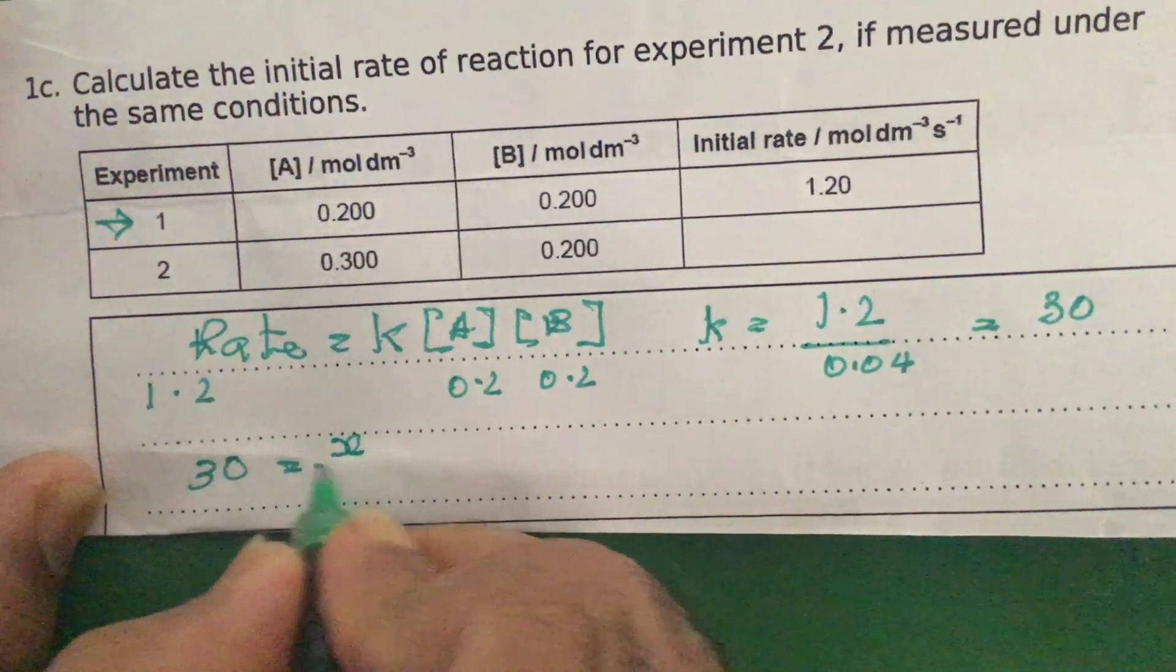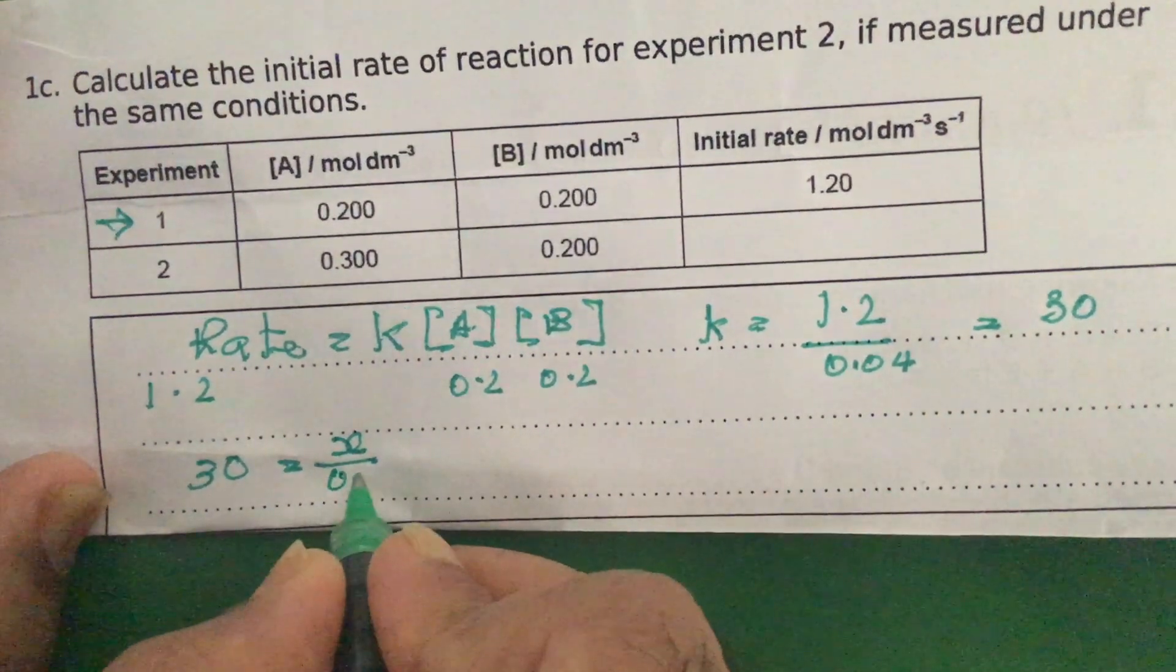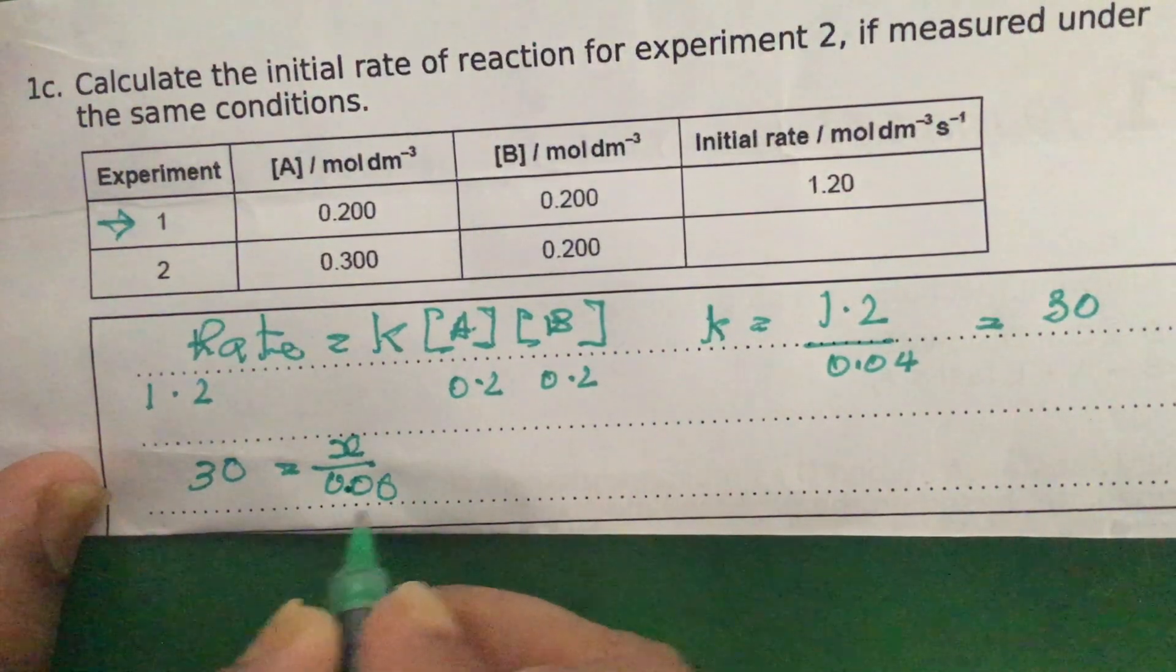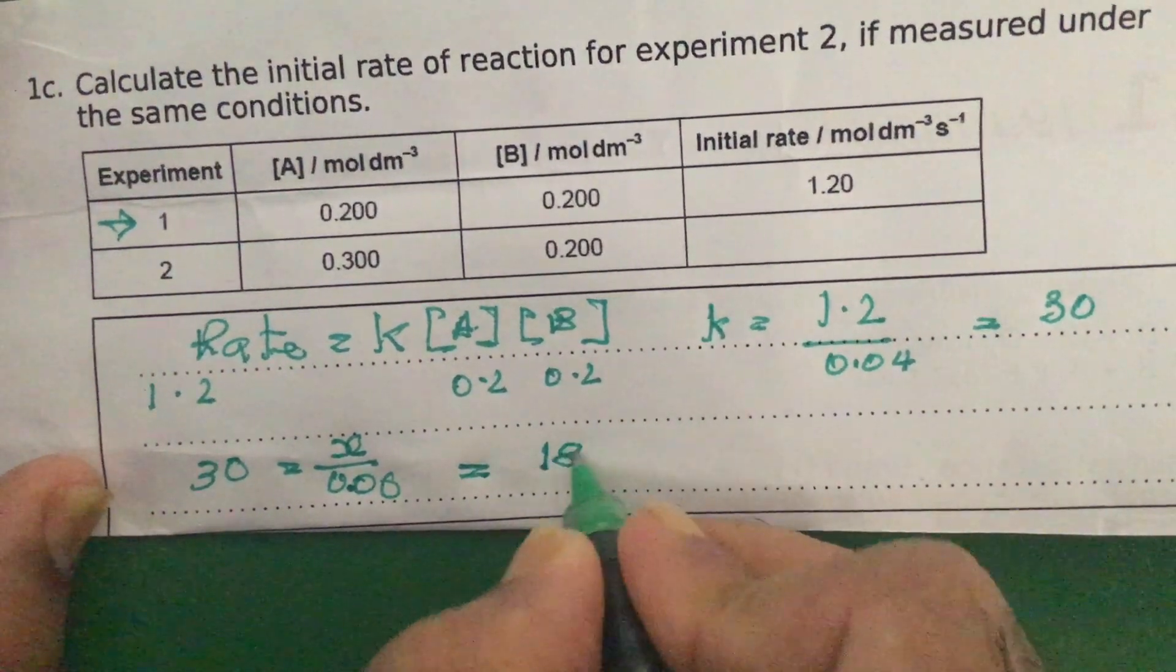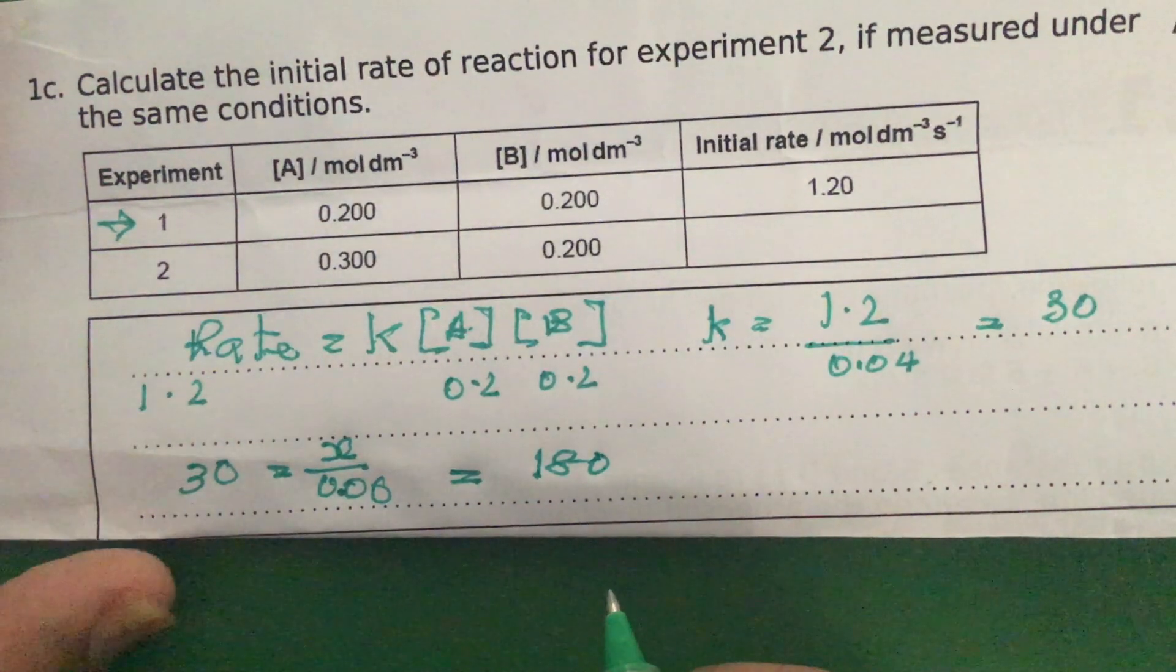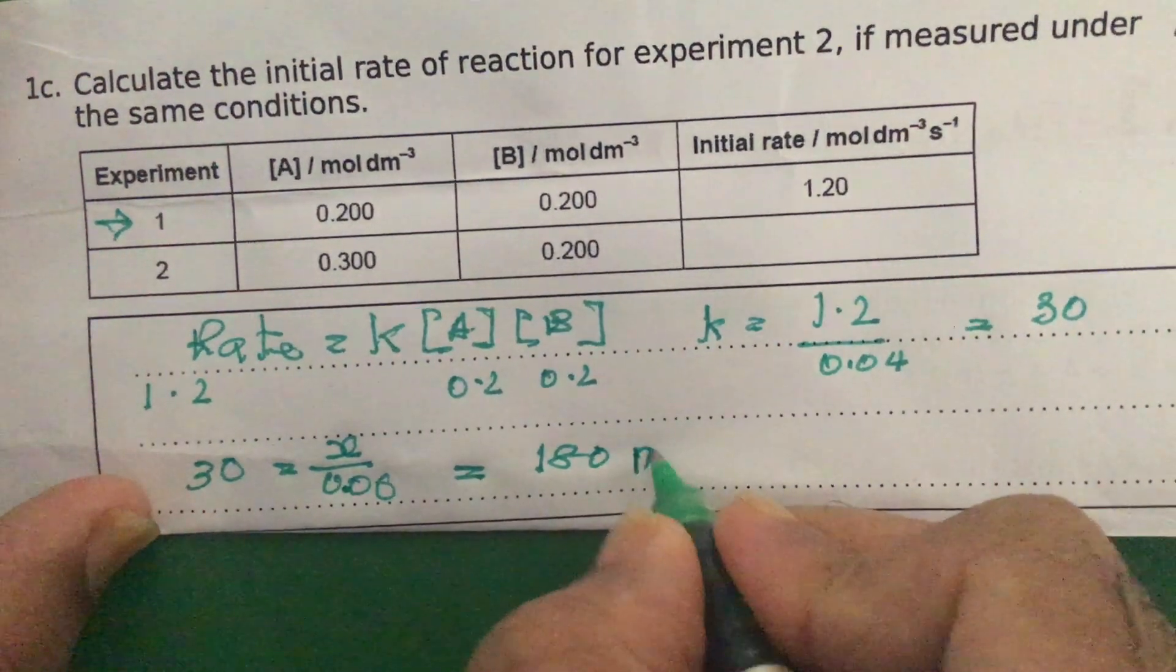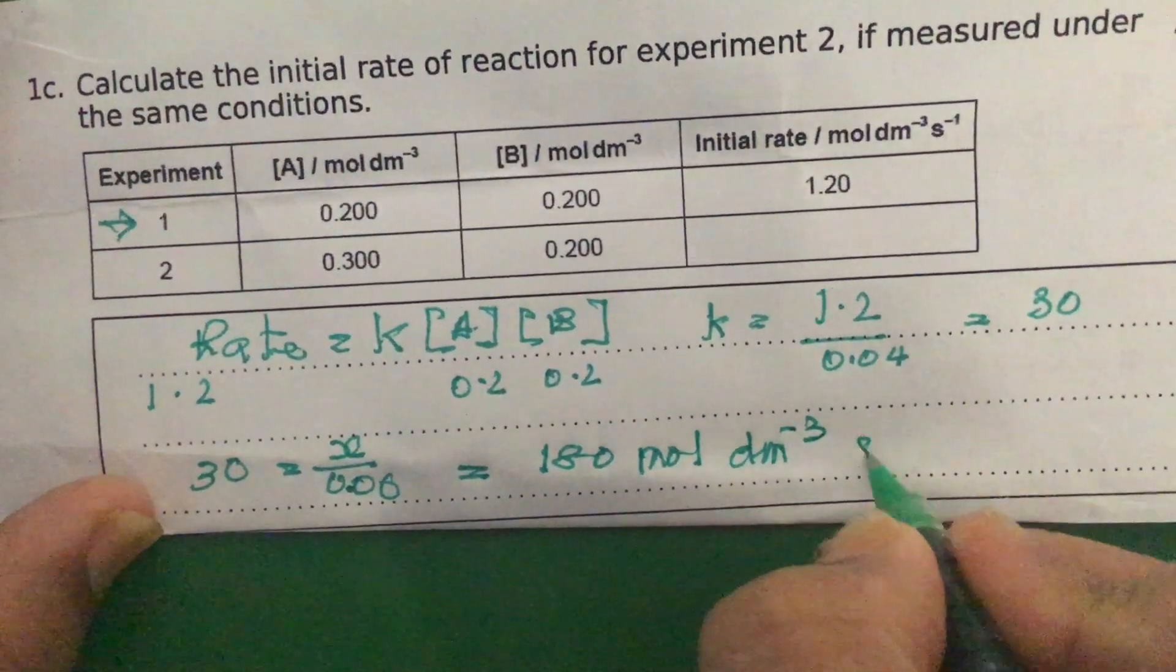divided by 0.3 multiplied by 0.2, which is 0.06. And then 0.06 multiplied by 30 would be equal to 180. And that 180 would have the units moles per dm cubed per second.